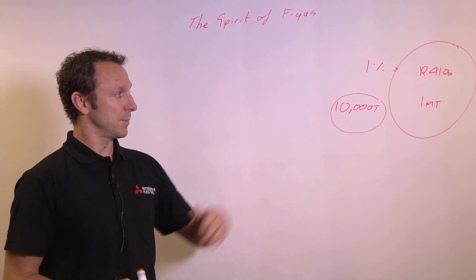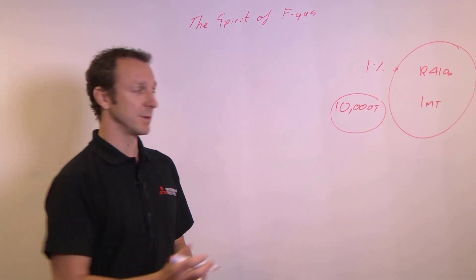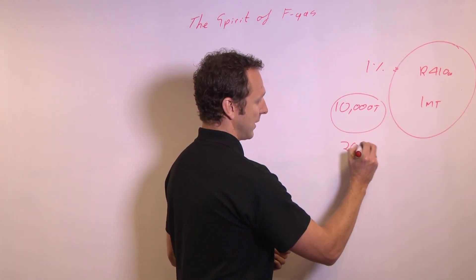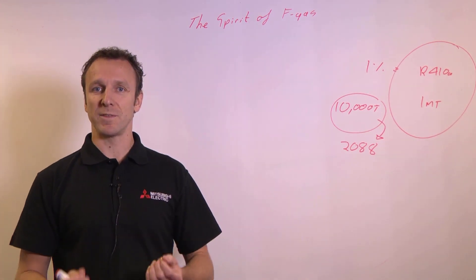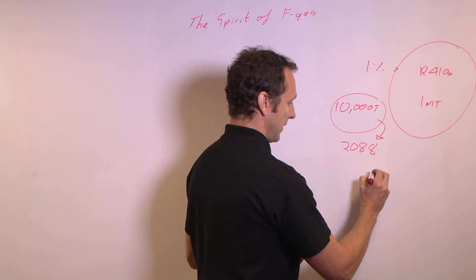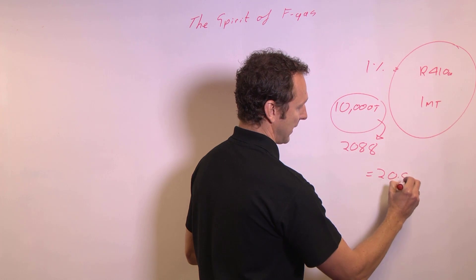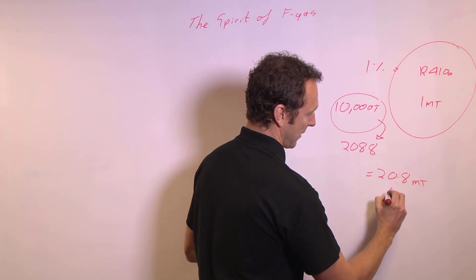Now the story doesn't stop there, because R410A has a global warming potential of 2088. I have to multiply the two together to get the CO2 equivalent that's being released, which is 20.8 million tonnes of CO2.